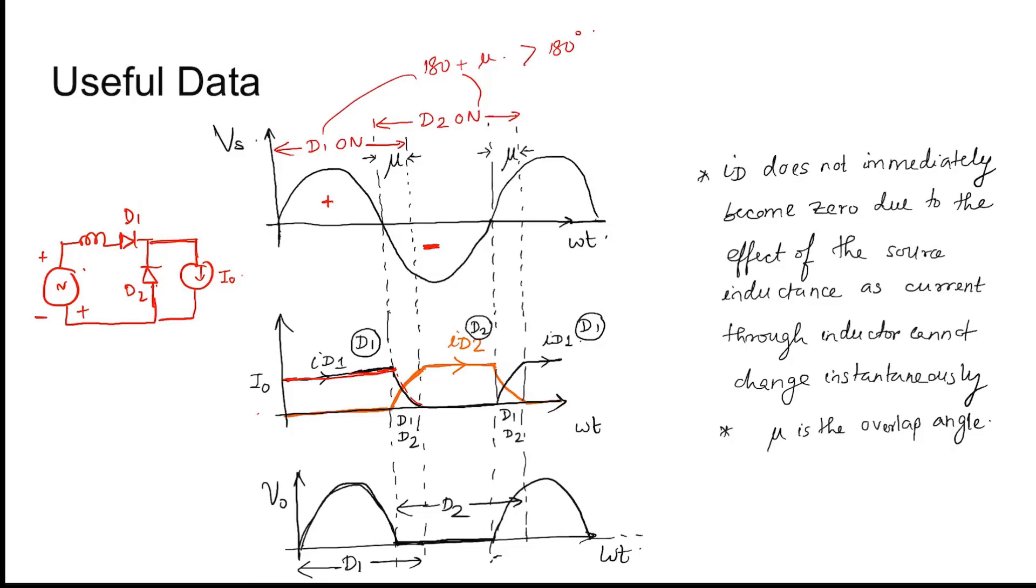As soon as the sign reverses like this, this D2 becomes forward biased and shorts the load side. So this current slowly becomes 0 and this D2 slowly increases. Now when D1 is on, this path is shorted and this D2 is open and the current flowing is I0.